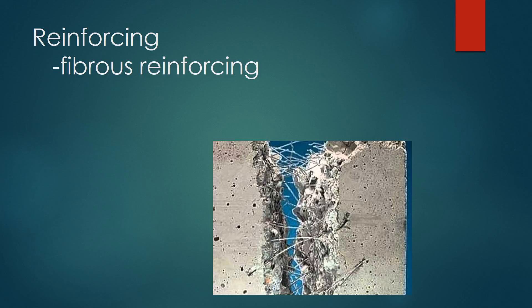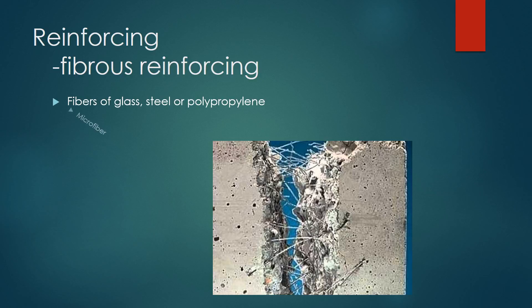Concrete can also be reinforced by fibrous reinforcing. Fibrous reinforcing is composed of glass, steel, or polypropylene. Microfiber reinforcing is usually added in low dosages to reduce plastic shrinkage cracking. Macrofiber protects against plastic shrinkage and also long-term cracking, and it can be used to replace steel in concrete slabs.